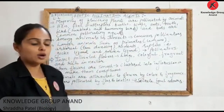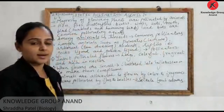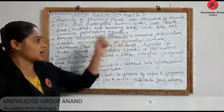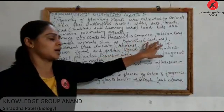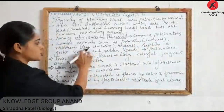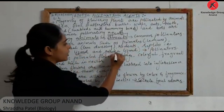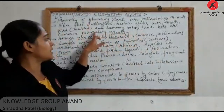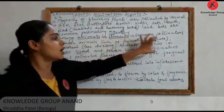If we are talking about animals, the most common pollinating agent — the most common pollinator — is insects. Apart from this, there are certain larger animals: primates, for example lemurs; arboreal (tree-dwelling) organisms; rodents; and reptiles such as gecko and garden lizard, which are also common pollinators.